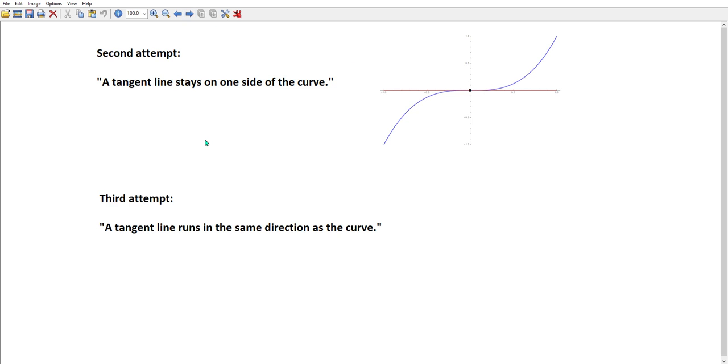A third and better attempt is to say a tangent line runs in the same direction as the curve. And that actually catches the essence of what a tangent line is, but we need to be considerably more precise than that.